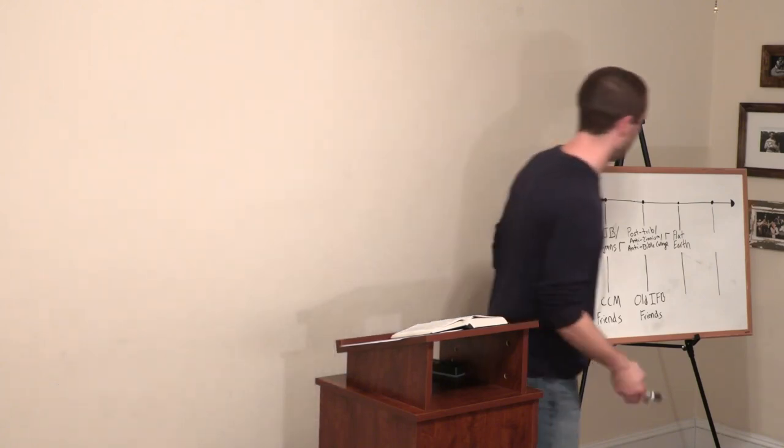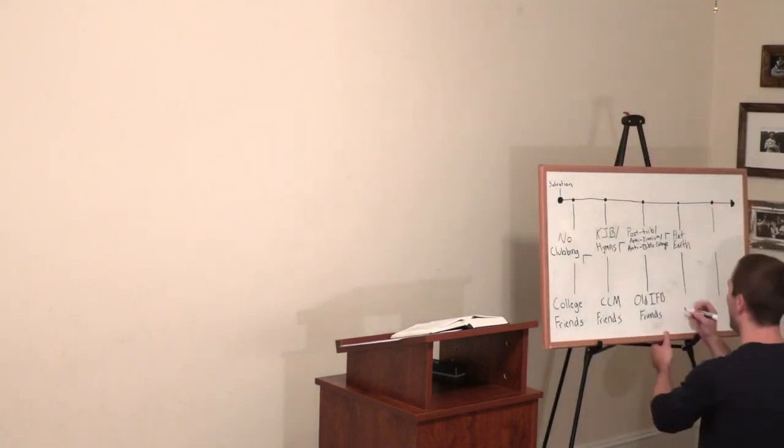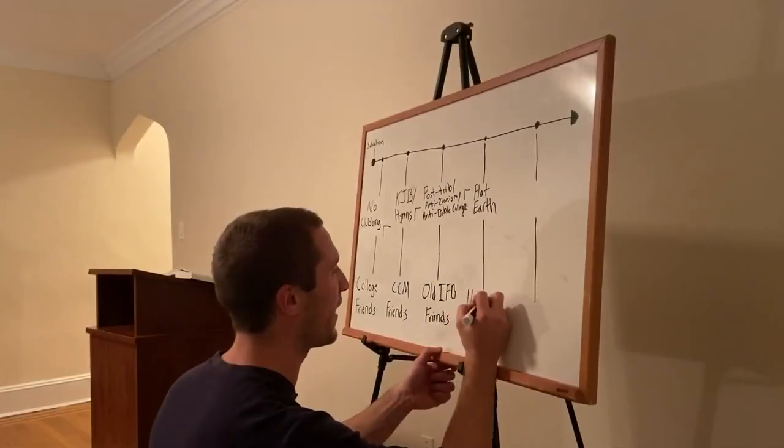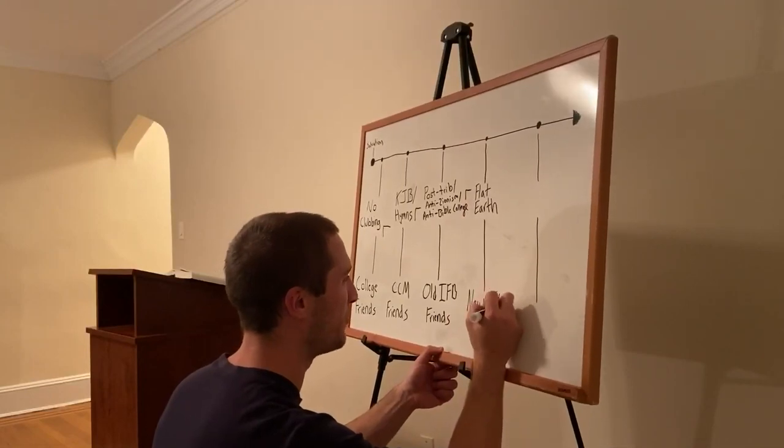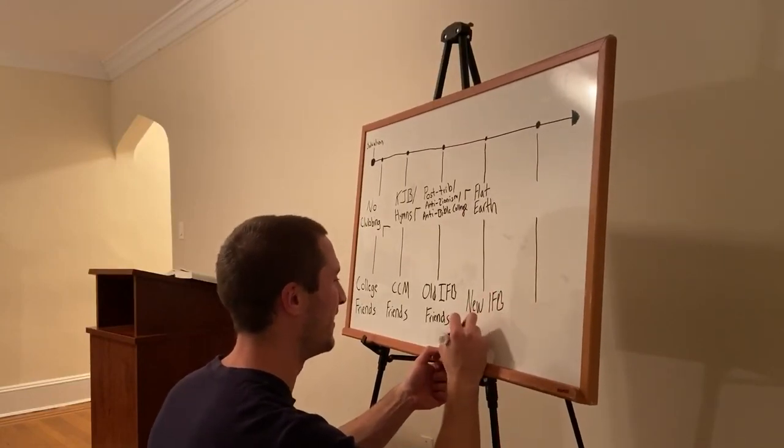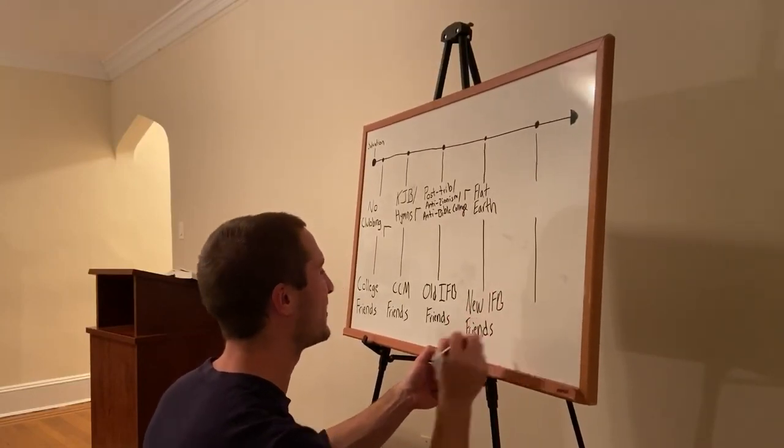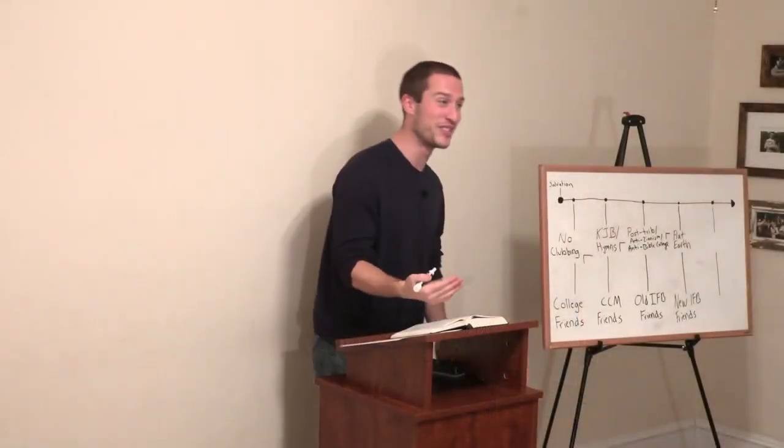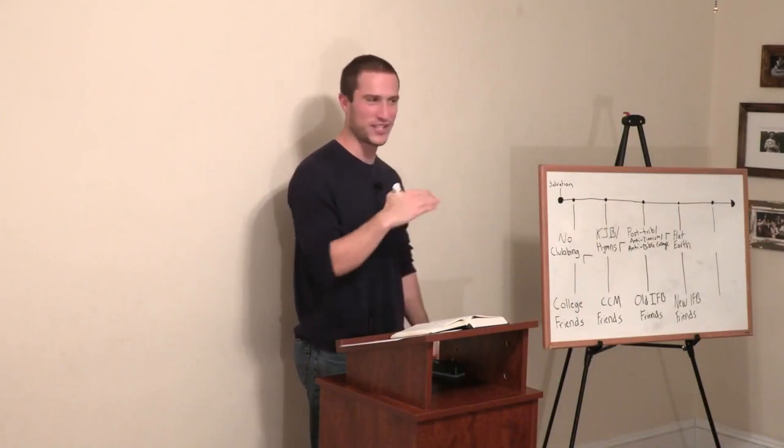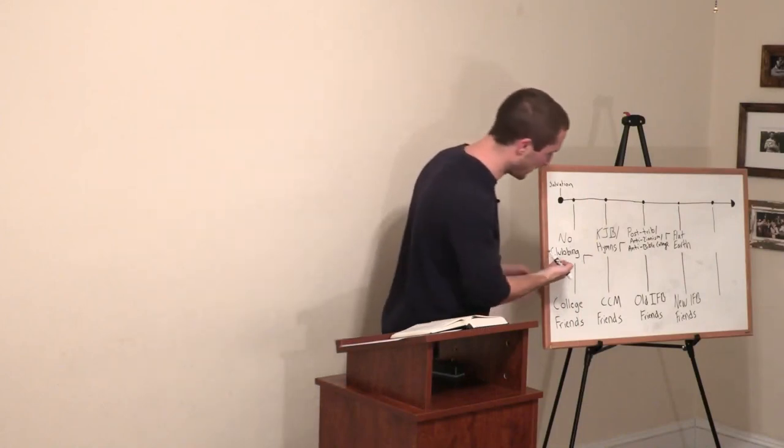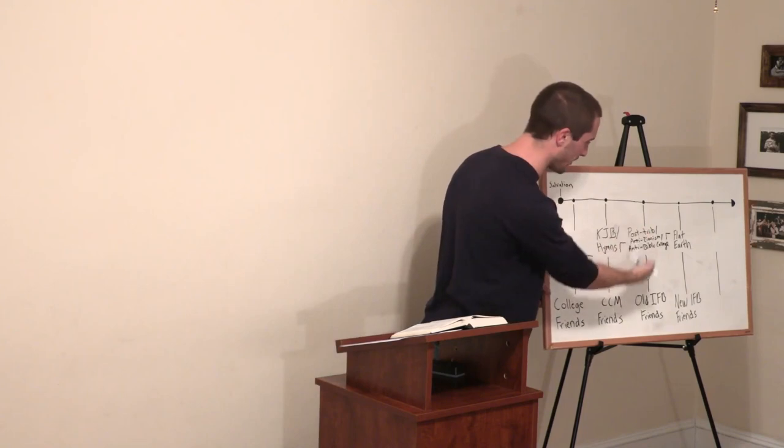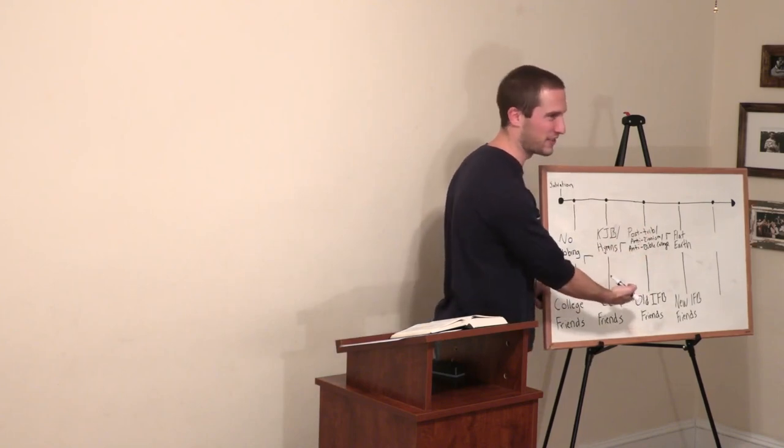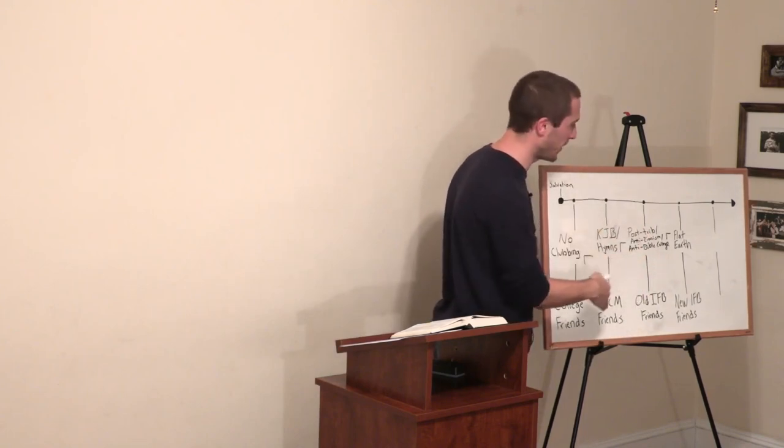And what happens? Justin lost not all, but 95% of his new IFB friends. Again, what is the title of the sermon? The title of the sermon is the cost of biblical knowledge. I am sure that you can see the pattern that is developing. I am always learning, always learning, always paying a price, no matter what, always paying the price.